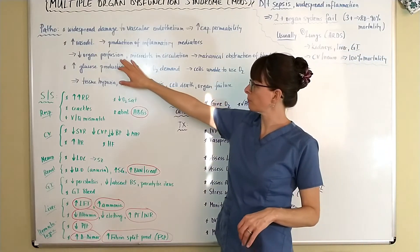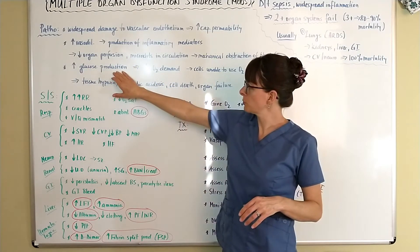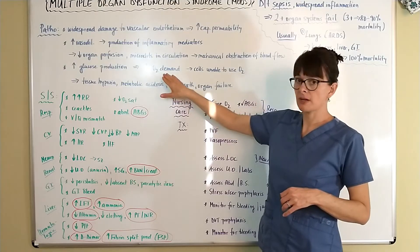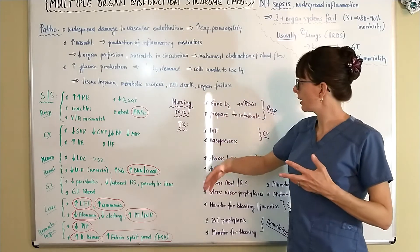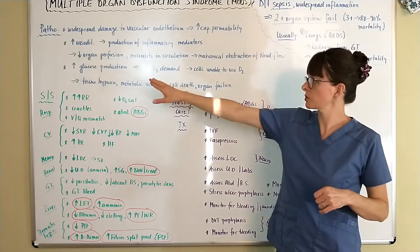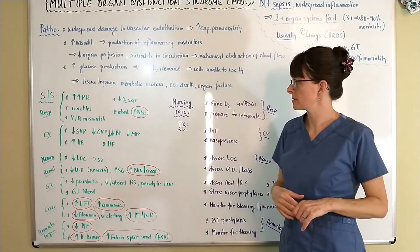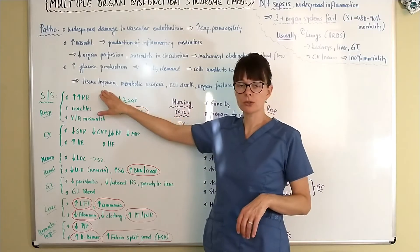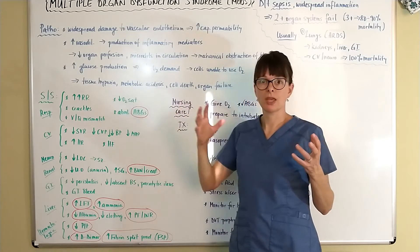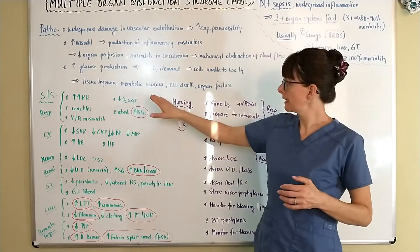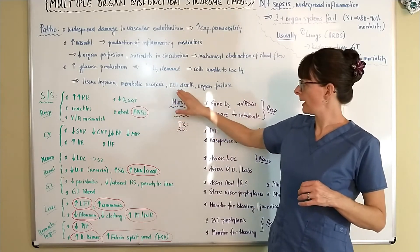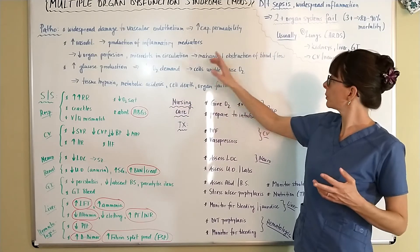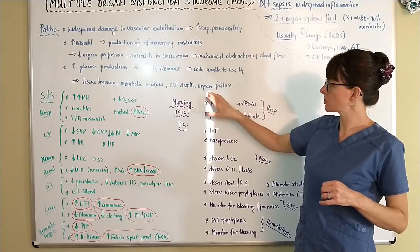Because of decreased organ perfusion, the body goes into a state of panic and produces more glucose due to the stress response, leading to increased oxygen demand. The cells are then unable to use the O2, causing tissue hypoxia. The body switches from aerobic to anaerobic metabolism, leading to metabolic acidosis. As tissues and organs don't get enough O2, cell death occurs, potentially leading to organ failure and multiple organ dysfunction.